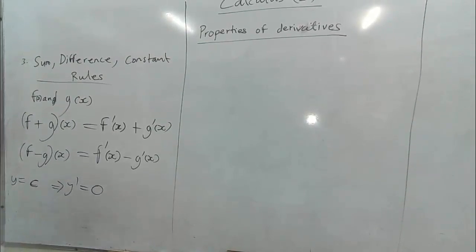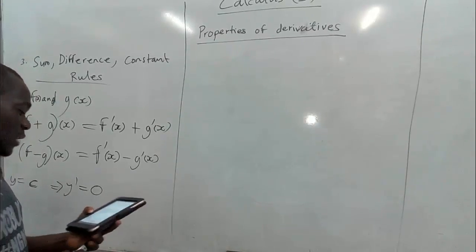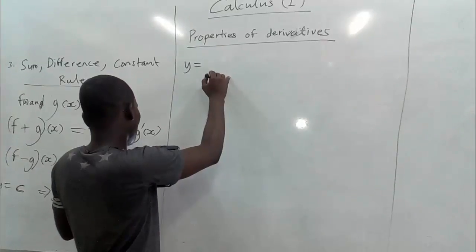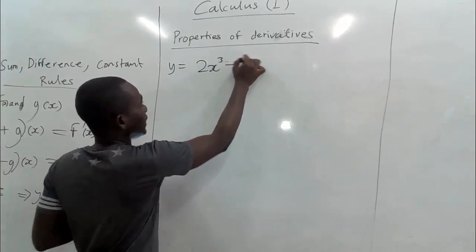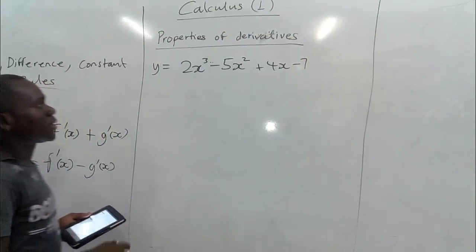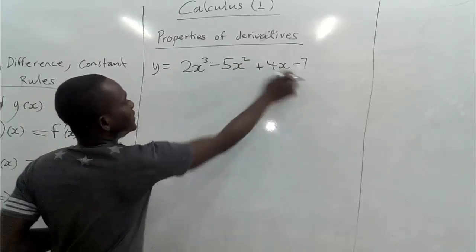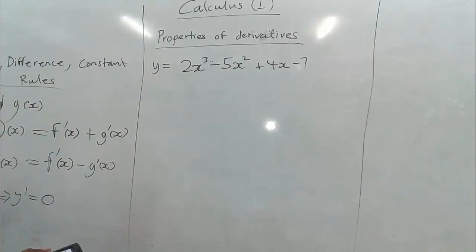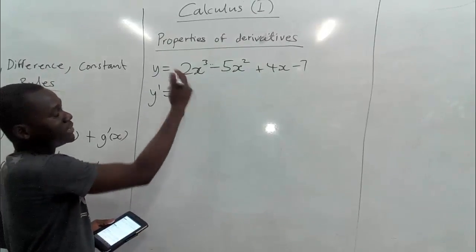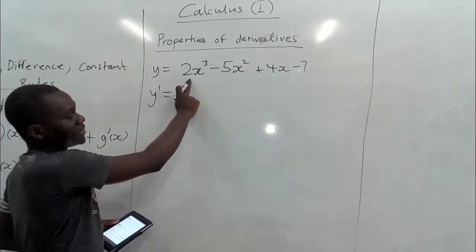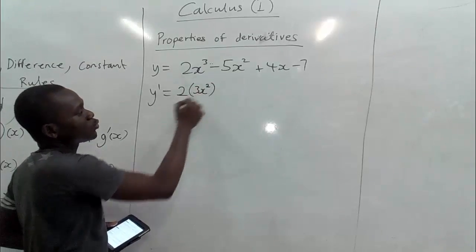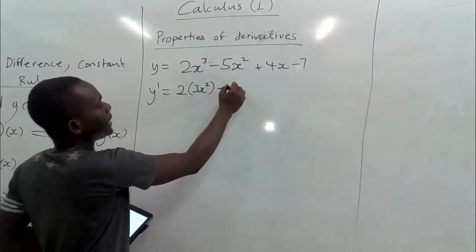Let's take some examples. Find the derivative of y equals 2x cubed minus 5x squared plus 4x minus 7. You can see we have sums and differences all joined together, which tells us to differentiate term by term. Our y prime will be: we keep the constant 2 and differentiate x cubed, giving us 3x squared by subtracting one from the power. We then maintain the 5.